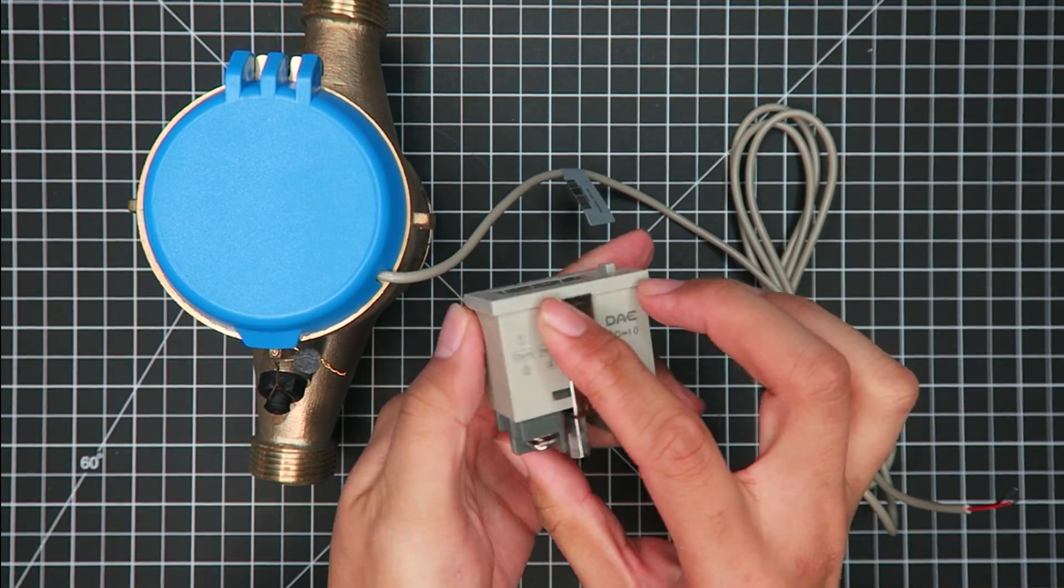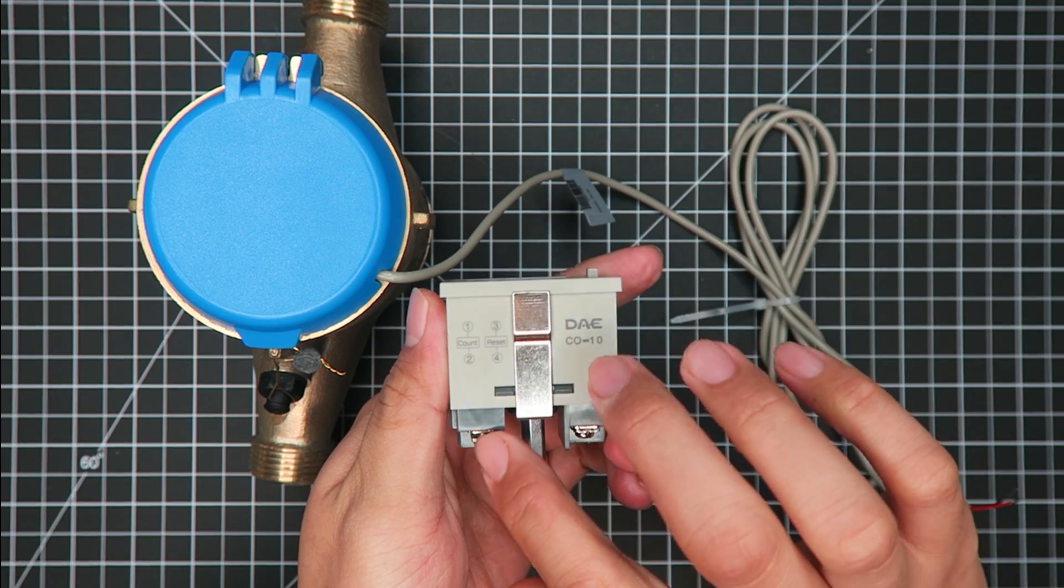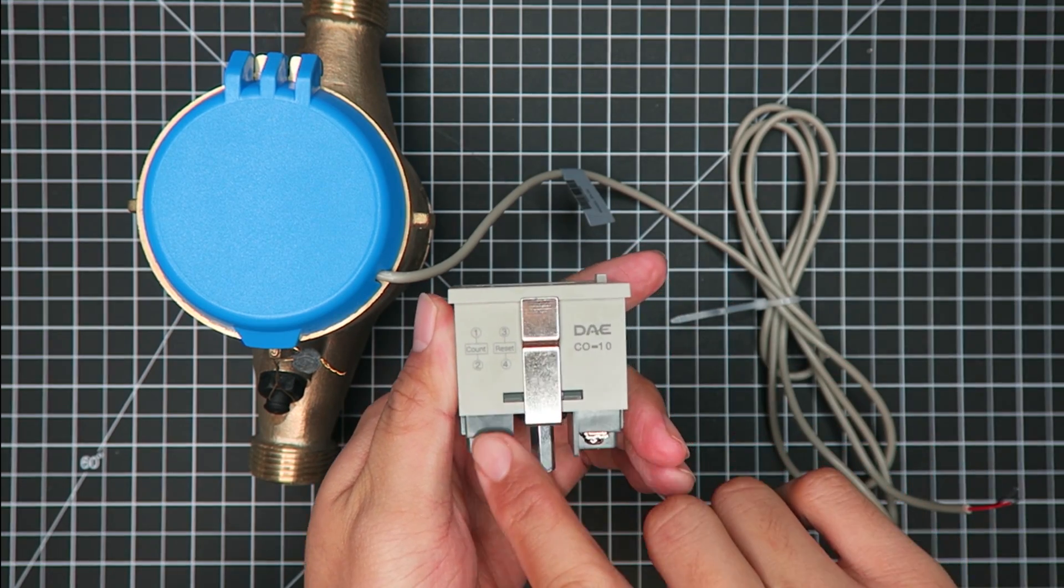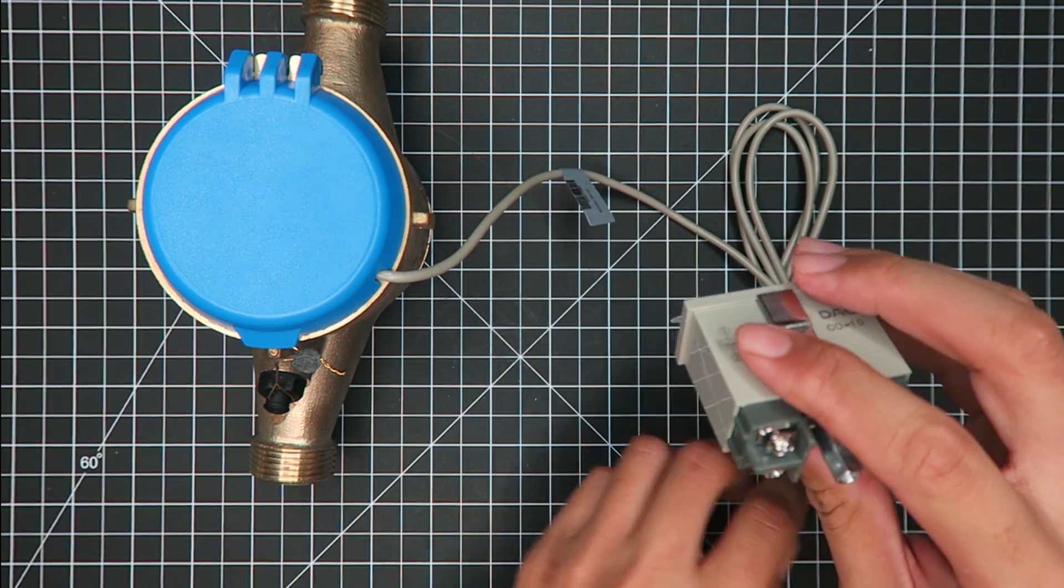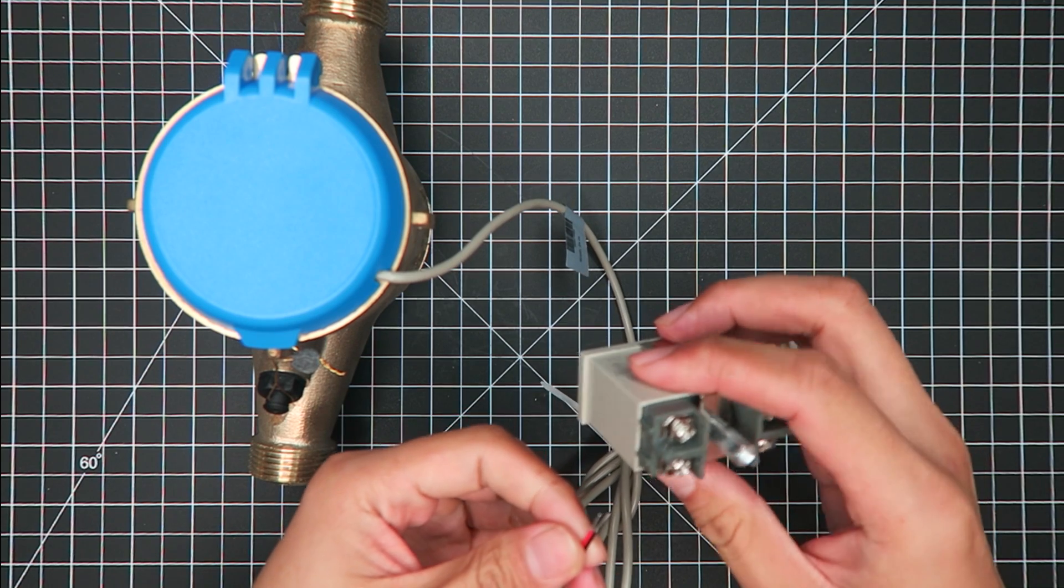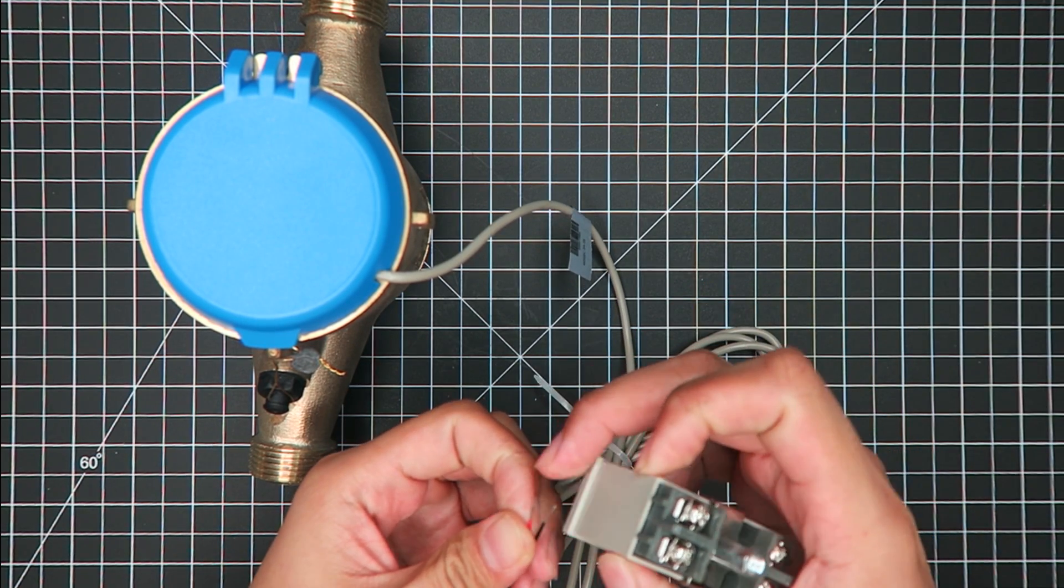As you can see here, this side, these two ports are for the count. Simply connect the two wires to the two terminals here. Let me do that real quick.